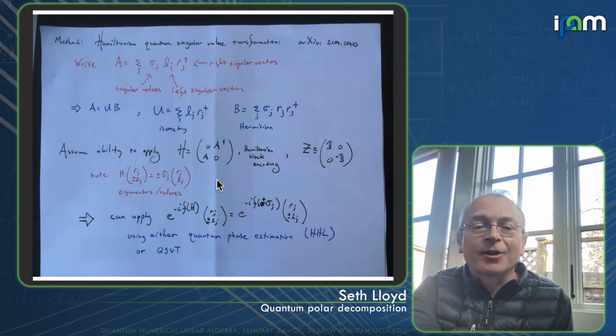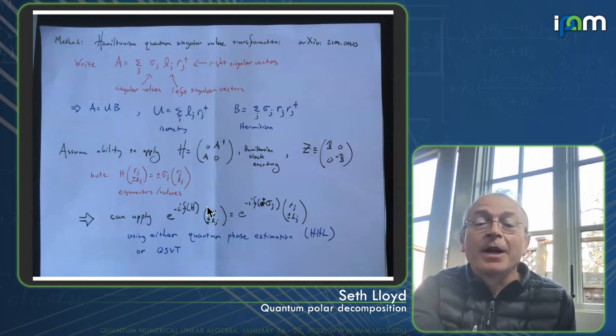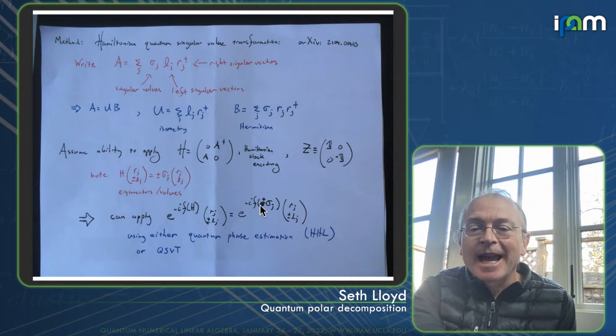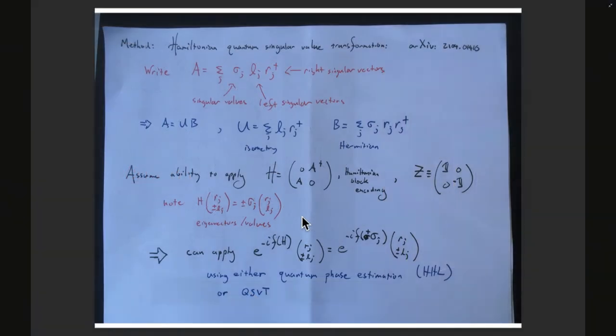And then there are two methods for actually, if you can apply this H and apply this Z, then it turns out that you can apply e to the minus i F of H. This is the singular value transform where when applied to an eigenvector, then I get e to the minus i F. I'm sorry, I just got to mess this up here. Plus or minus sigma j Rj plus or minus Lj. So the idea is that if we want to, the idea of the quantum singular value transform is if we can apply a matrix A, then we want to apply a new matrix F of A, where the singular values have been replaced with F of the singular values. And that's what this transformation does.